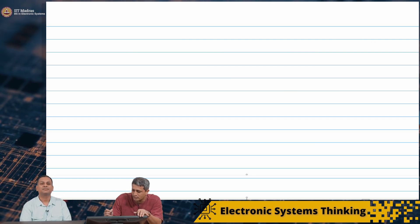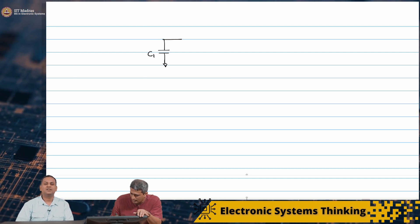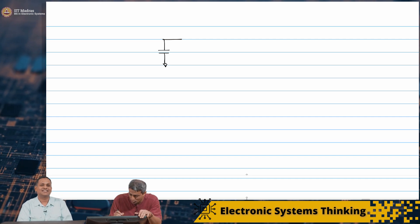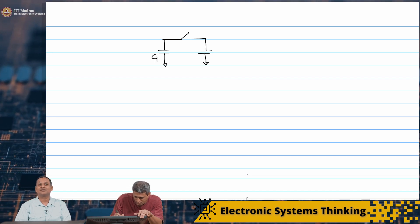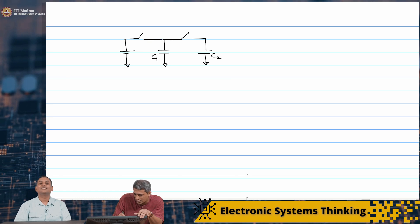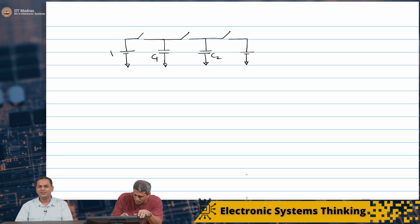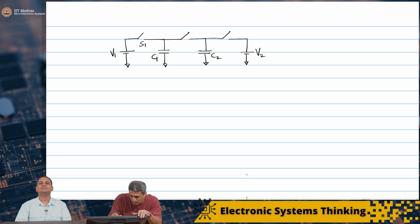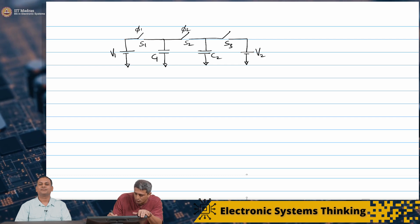What you are saying is a very interesting problem. You are saying that I have C1 charged to some V1 initially. Let us draw the switch picture. I have C1, C2, and a DC source — an ideal DC source with infinite charge — and a third switch and a second DC voltage. So this is V1, this is V2. So I have switch S1, S2, S3 controlled by signals phi 1, phi 2, and phi 3.